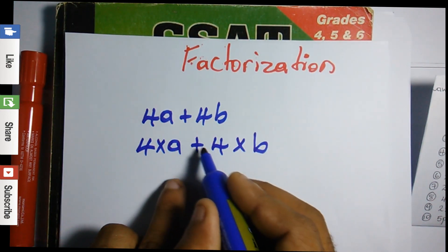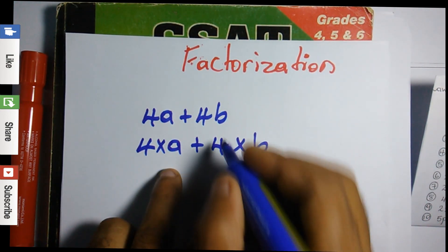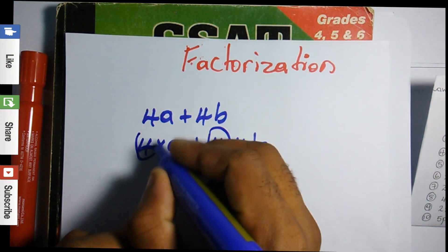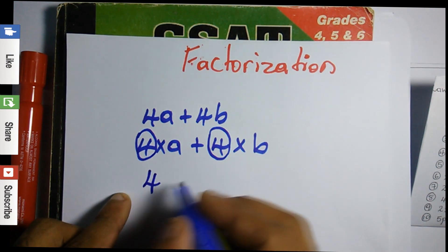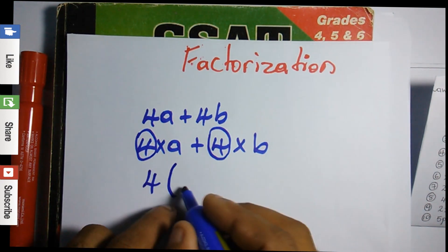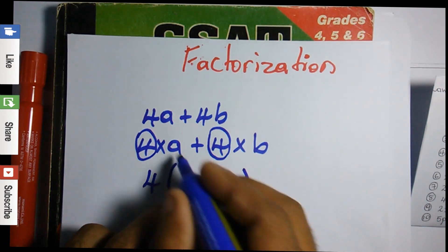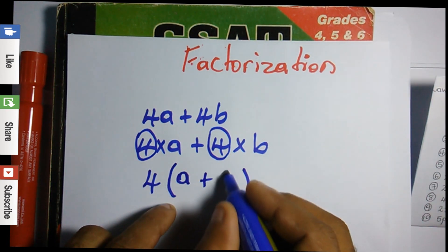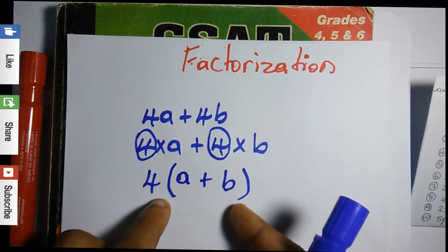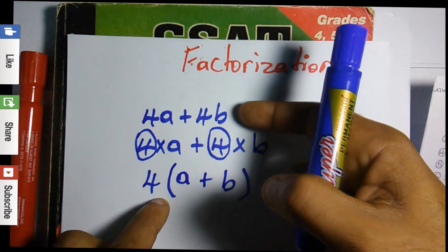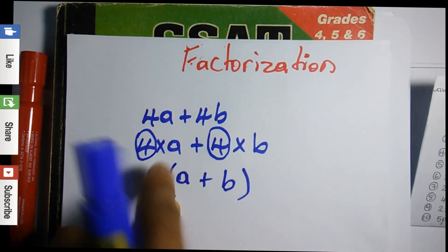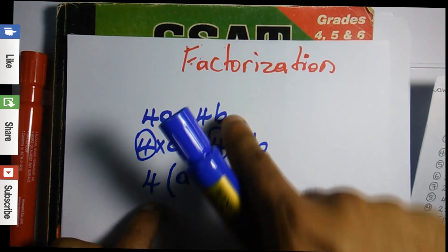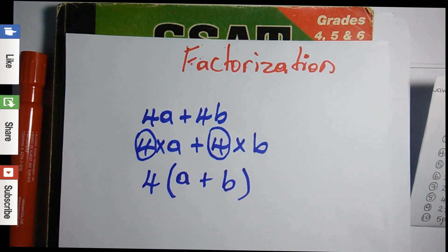So we would have 4 times a plus 4 times b, then we would look on both sides of this plus sign to see what is common. We realize that we have a 4 on both sides, so 4 is common. We write down that 4, open a bracket, and what's left goes inside the bracket, which is a plus b. Remember, bracket means to multiply, so 4 times a is 4a and 4 times b is 4b.